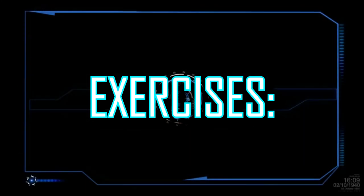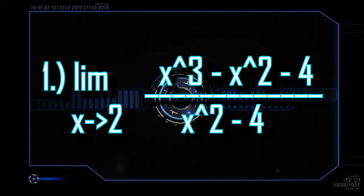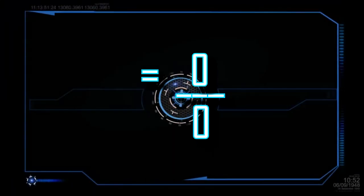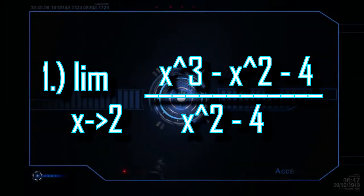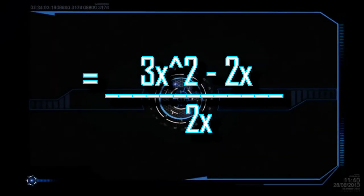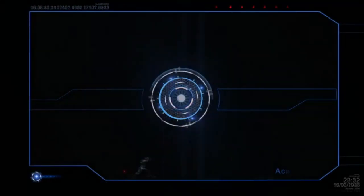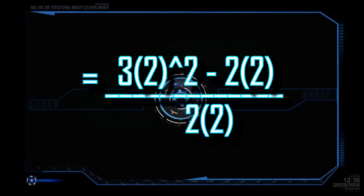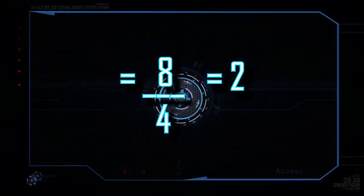Let's take on some exercises. Given the limit of x³ minus x² minus 4 over x² minus 4 as x approaches 2. When we substitute 2, the answer is equal to the indeterminate form 0 over 0. So we need to use L'Hôpital's rule. The derivative of the numerator x³ minus x² minus 4 is 3x² minus 2x. The derivative of the denominator x² minus 2 is 2x. Substituting x equals 2 in 3x² minus 2x over 2x, we get 12 minus 4 over 4. Finally, the answer is 8 over 4, which is 2.